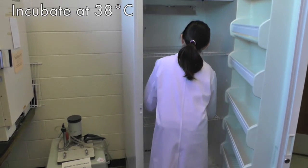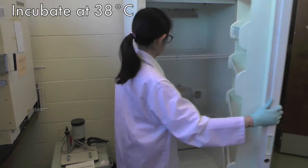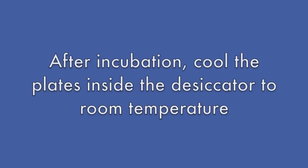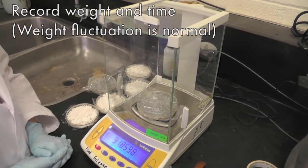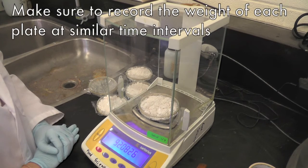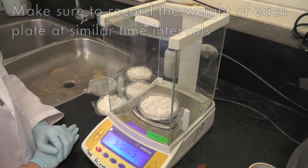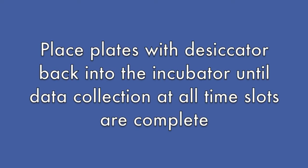Arrange with your TA to come in and weigh the plates in the next coming days. Quickly equilibrate the plates to room temperature, then record the weight of each plate. Record also the exact time. Then place the desiccator back in the incubator until you are finished with data collection.